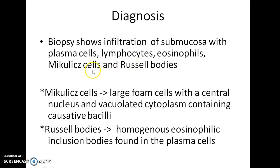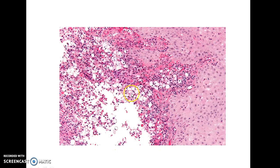The Mikulicz cells are characteristic of Rhino Scleroma — they are large foam cells with a central nucleus and vacuolated cytoplasm containing the causative bacilli. Russell bodies are homogenous eosinophilic inclusion bodies found in plasma cells. This picture shows the histopathology of Rhino Scleroma; you can see the Mikulicz cells and lymphocytic infiltration.